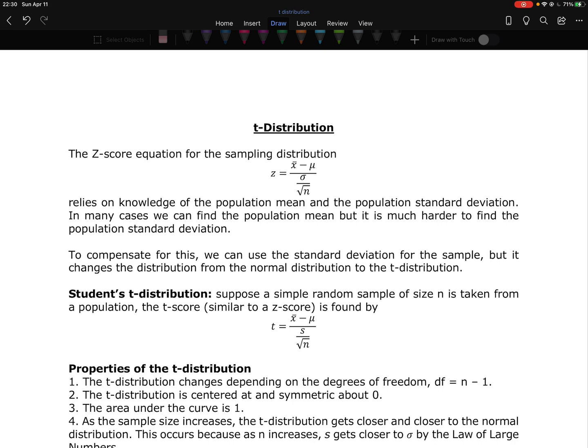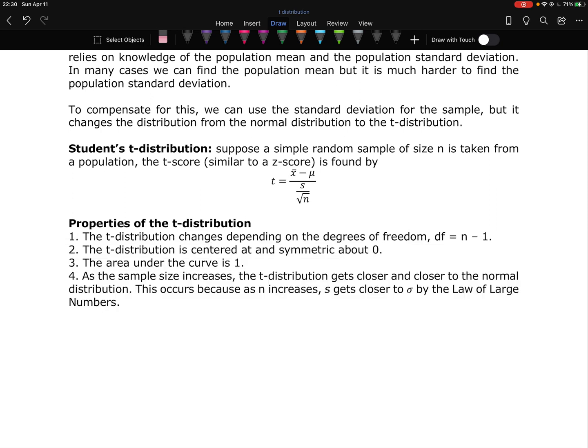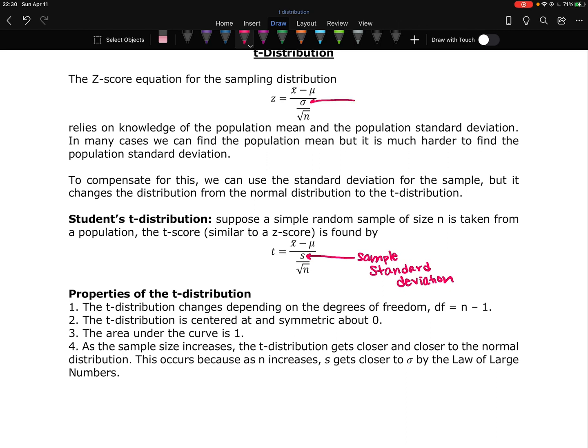t equals x bar minus mu over s over the square root of n. So now this s is the sample standard deviation. So all I've done in this formula is replaced the population standard deviation from above, sigma, with the sample standard deviation.